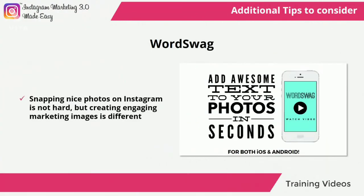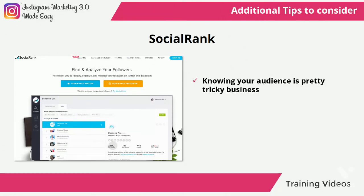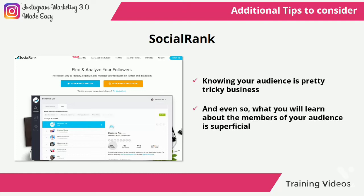Word Swag — snapping nice photos on Instagram is not hard, but creating engaging marketing images is different. Word Swag will allow you to easily add graphic elements to your photos, and with this app you will be able to edit awesome marketing images in less than two minutes. Social Rank — knowing your audience is pretty tricky business. You can learn more about your audience by looking at what type of accounts they follow, how much they post, and so on. But learning about your audience gets much more difficult once it starts growing into the thousands. Social Rank is a marketing tool that will give you insights not about your audience's behavior, but about its demographics — average number of members per gender, age, location, and others.